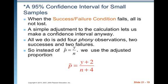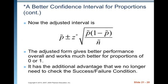A note on 95% confidence intervals for small samples: when the success-failure condition fails, all is not lost. A simple adjustment lets us make the confidence interval anyway — we add four imaginary observations: two successes and two failures. So instead of p-hat equals y over n, we use an adjusted proportion. We don't actually have to do this in AP Stats, but it's good to know that this adjustment exists to compensate when the success-failure condition fails.